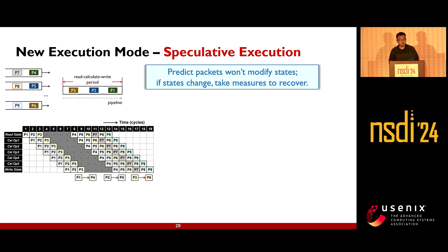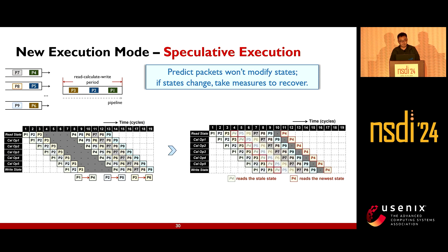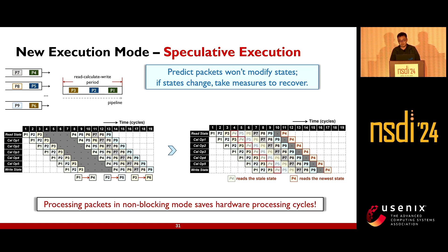For the blocking problem mentioned earlier, P1, P2, and P3 are being processed in the read-calculate-write period. Only P1 modifies the state; P2 and P3 do not. In traditional blocking execution, four bubbles need to be inserted into the pipeline to ensure state consistency. But with speculative execution, P1 to P9 are all sent to the pipeline for processing. Then P4 finds it has read the old state, so it is sent back to re-read the latest state. Processing in non-blocking mode saves two hardware cycles.